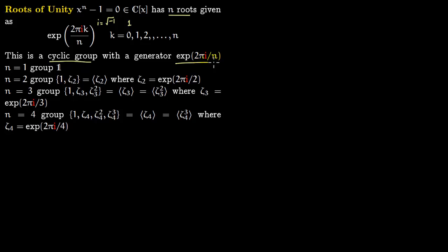The generator of this cyclic group is e^(2πi/n), which you get by plugging in k=1. For example, if n is 1, you only have k=0, giving just the identity group containing only 1. If n is 2, the elements are 1 and ζ₂, generated by ζ₂ = e^(2πi/2). Note that ζ₂ squared gives you 1.